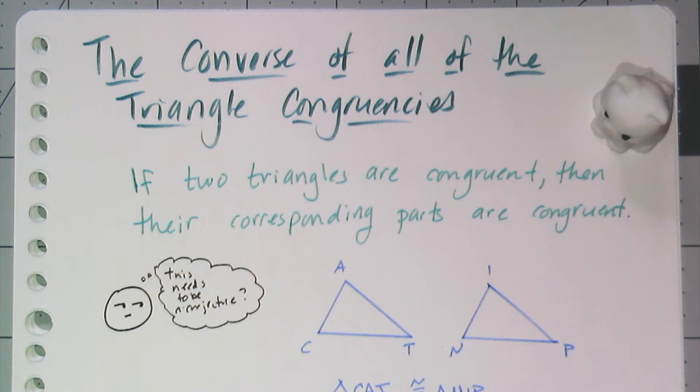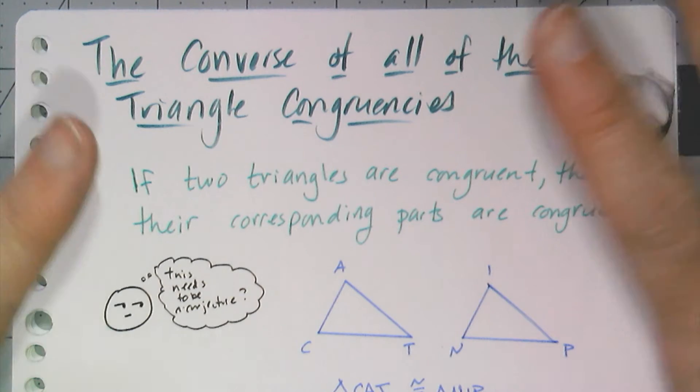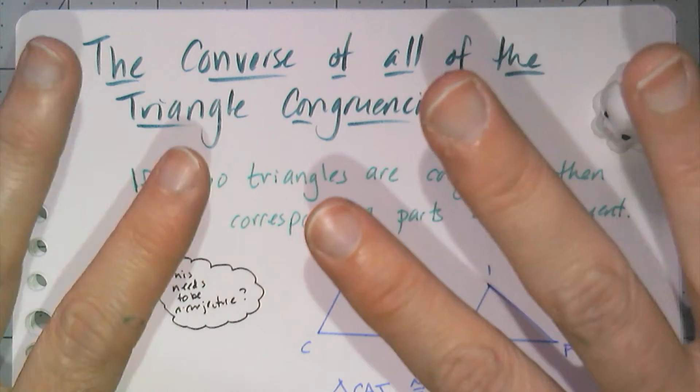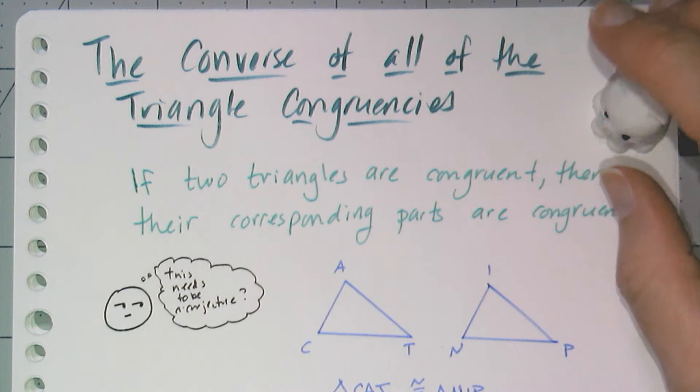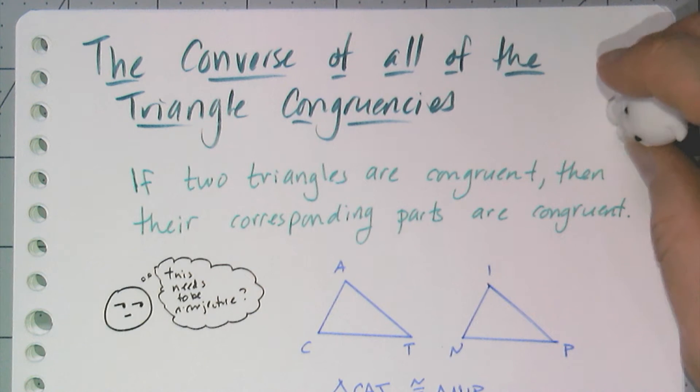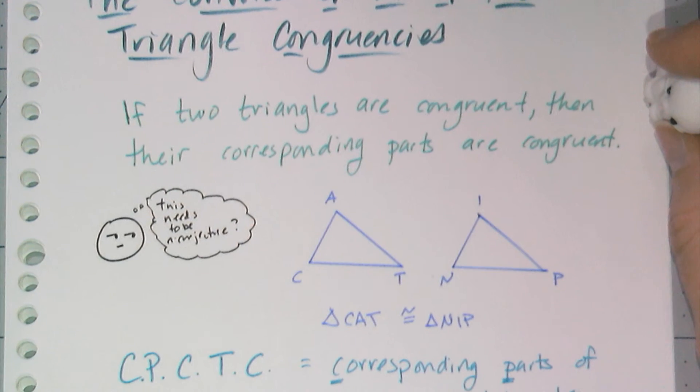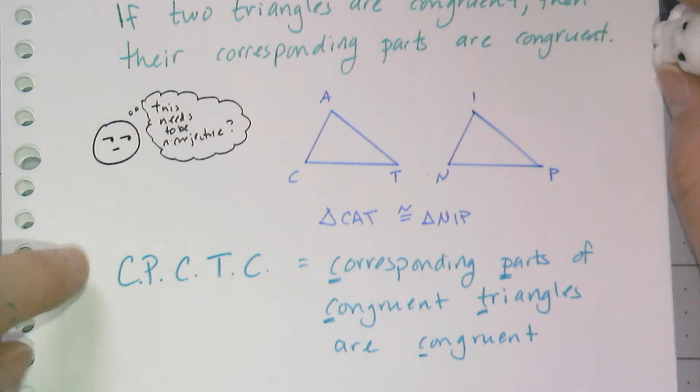So why is there a video on this, you may be asking yourself? It's because this concept is a key component to many of the proofs you're going to do. When we look at polygons, quadrilaterals, circles, you're actually going to be looking for congruent triangles—you're going to be seeking them out because you're going to have to show that parts of them are congruent.